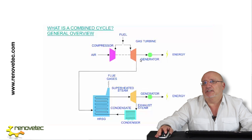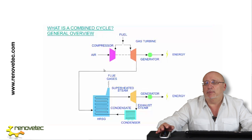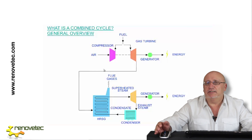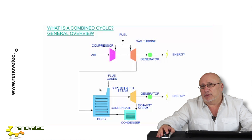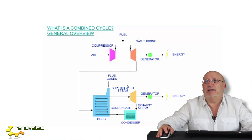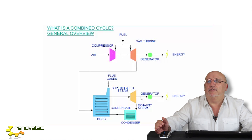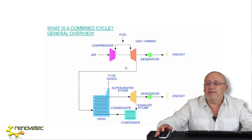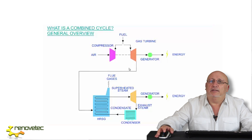The efficiency of the gas turbine is more or less 30-35%. But when we connect together one gas turbine and one steam turbine, what we obtain is 55 or 60 or even more percent of the energy contained in the fuel.